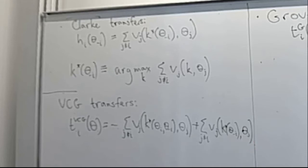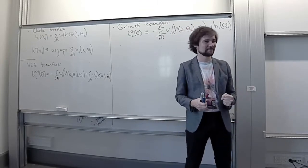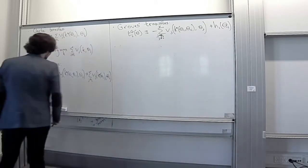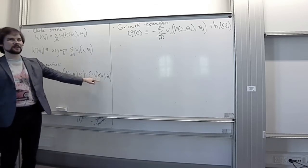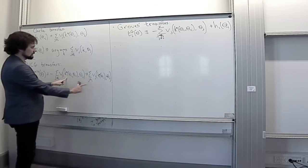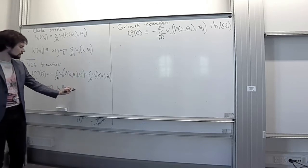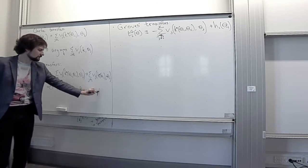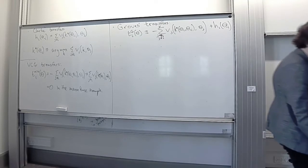To see that VCG prescribes reasonable transfers, let's calculate VCG transfers for the moon base problem. The transfers are zero — because k* equals one in both cases. Excluding one person still leaves the sum of valuations above 500 million, so k*(theta) and k*(theta_{-i}) are the same, making the two sums identical, and thus the transfer is zero in the moon base example. VCG is the solution for a lot of our troubles.